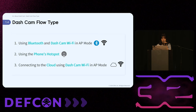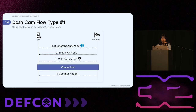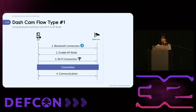Dashcam connectivity can be categorized into three types: connecting via Bluetooth and dashcam Wi-Fi, connecting through a phone's hotspot, and communicating via the cloud. In the first type, the app connects to the dashcam via Bluetooth, then the dashcam activates AP mode. Once the app connects to the dashcam's Wi-Fi, communication between the app and the dashcam is established.